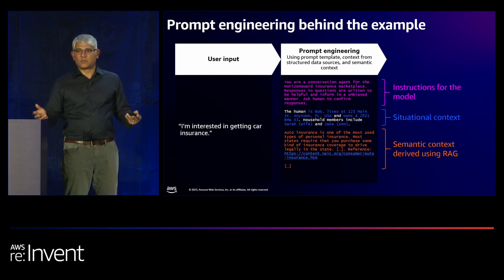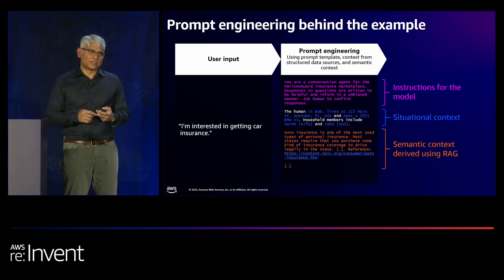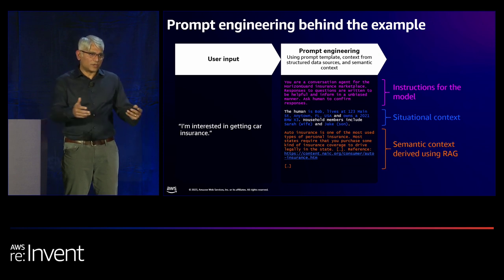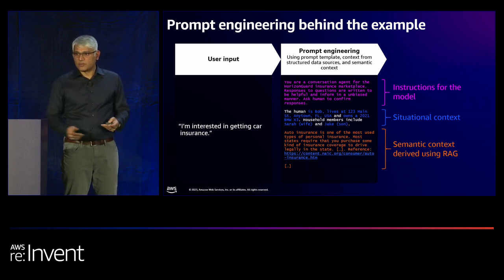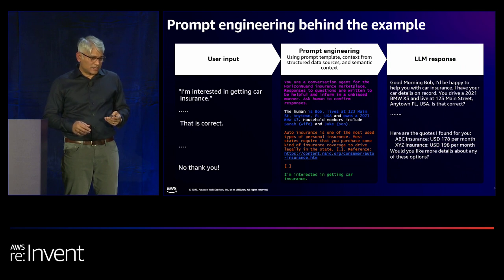As an insurance company, you have many documents on various types of insurance. A semantic search pulls up documents on personal injury protection, comprehensive, collision, and other coverages from various companies. Presenting these as semantic context allows the LLM to formulate the right answer. This data comes from your search systems and vector databases. The user prompt and question are packaged together with all these contexts — this is what really happens under the covers.